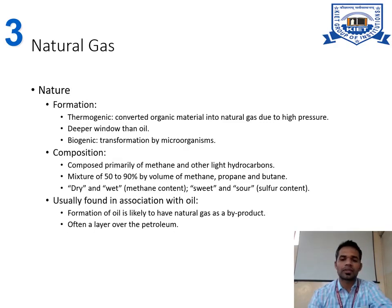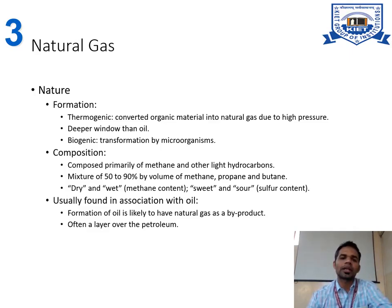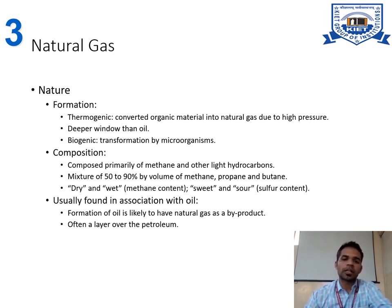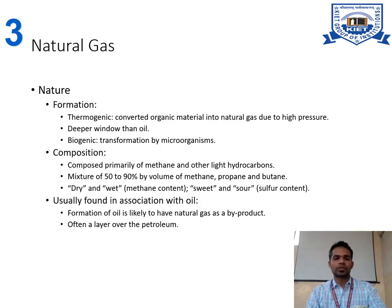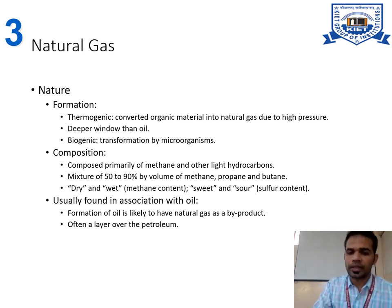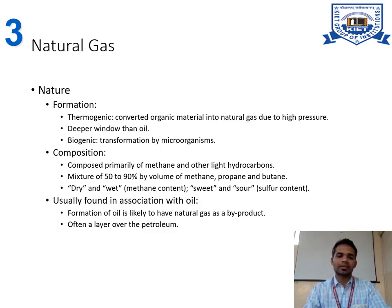The third conventional energy resource is natural gas. Formation: first, thermogenetic — organic material is converted into natural gas due to high pressure, at a deeper window than oil. Second, biogenic transformation by micro-organisms. Composition: composed primarily of methane and other light hydrocarbons, a mixture of 50 to 90% by volume of methane, propane, and butane. Dry and wet refers to methane content; sweet and sour refers to sulfur content.